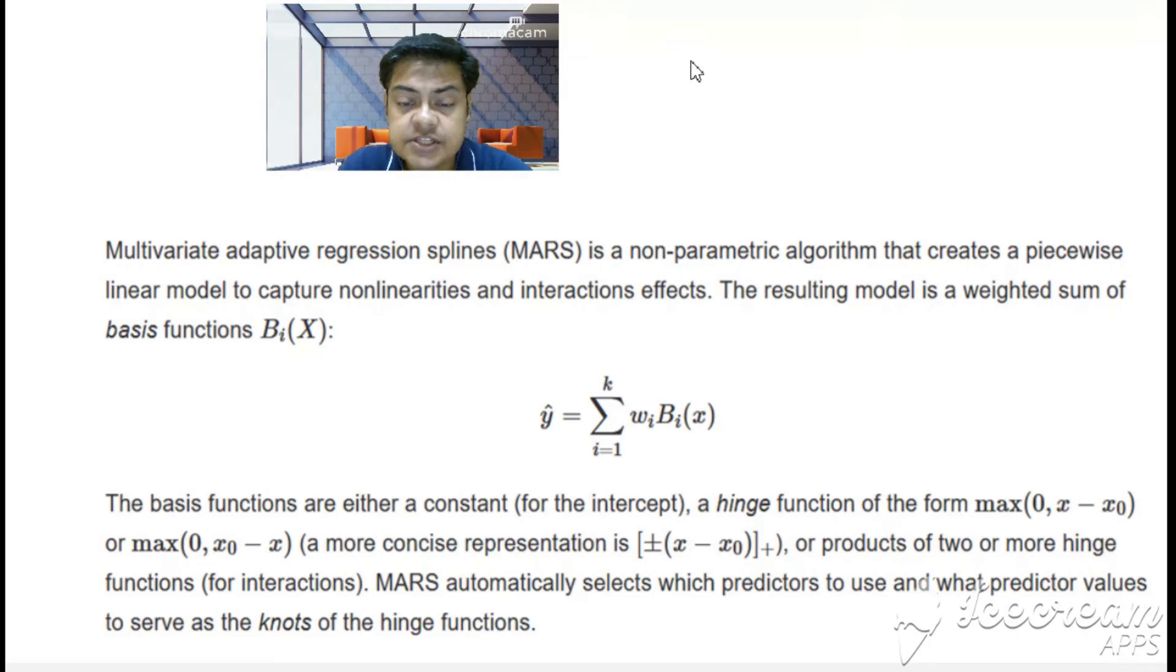The basis functions are either a constant—so intercept is a constant, we all know there's a minimum value of y for all the x parameters being zero, so that's a constant—or a hinge function in the form of max(0, x - x0). That's called a hinge function, max(0, x - a) or max(0, a - x).